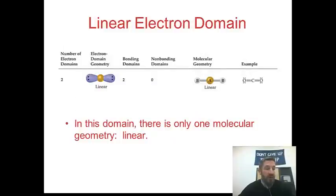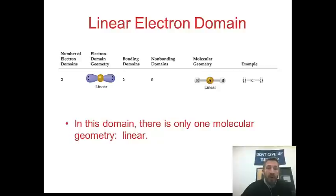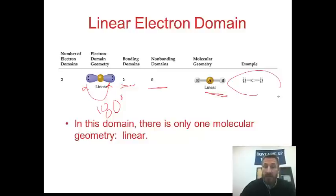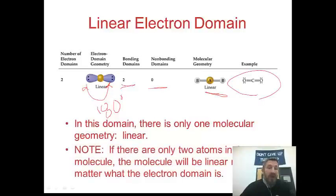We'll go step by step through each set of electron domains. First, two electron domains — that would be linear. When two electron domains want to get as far away from each other as possible, the angle is 180 degrees. There are two bonding pairs, no lone pairs, and the geometry is linear. An example is CO2. In this domain there's only one molecular geometry: linear. Anytime there are only two atoms in a molecule, the molecule will be linear regardless of the electron domain.